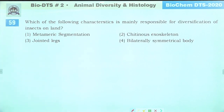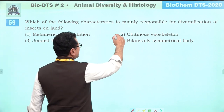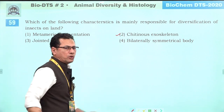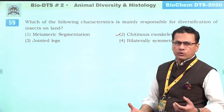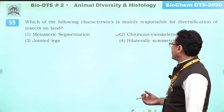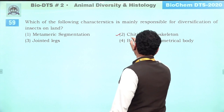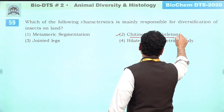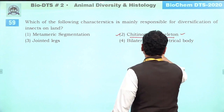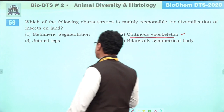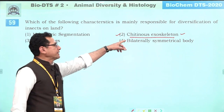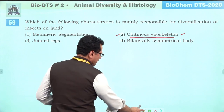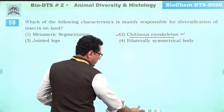Which characteristic is mainly responsible for diversification of insects on land? Chitinous exoskeleton — because to survive in air, the skin needs to be dry and protective, which is achieved through the chitinous exoskeleton. Symmetry does not help. Jointed legs only help in locomotion. Correct answer is chitinous exoskeleton.